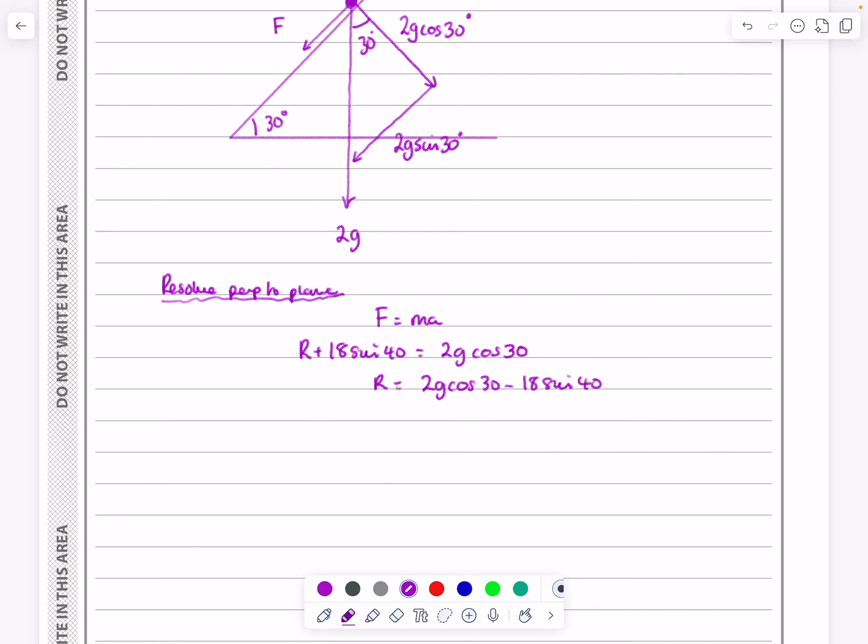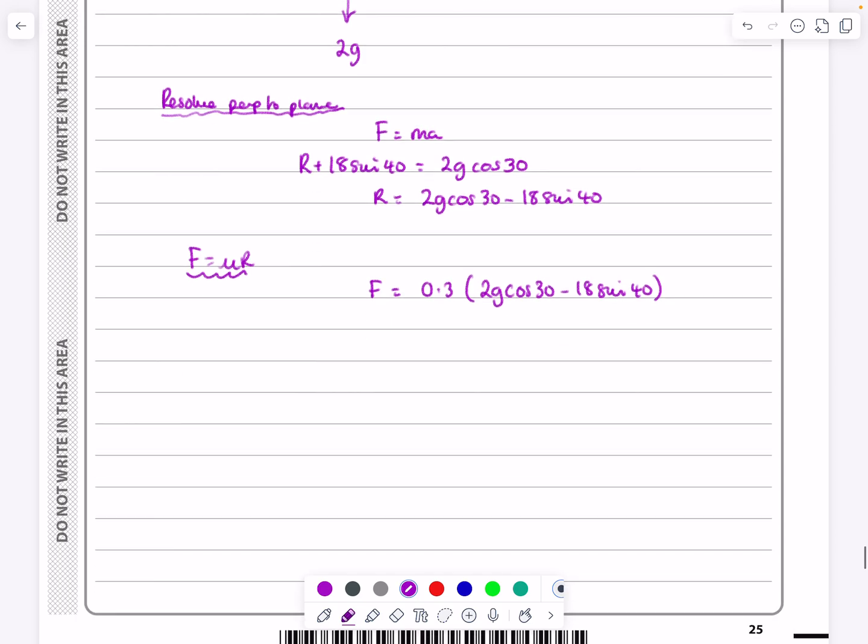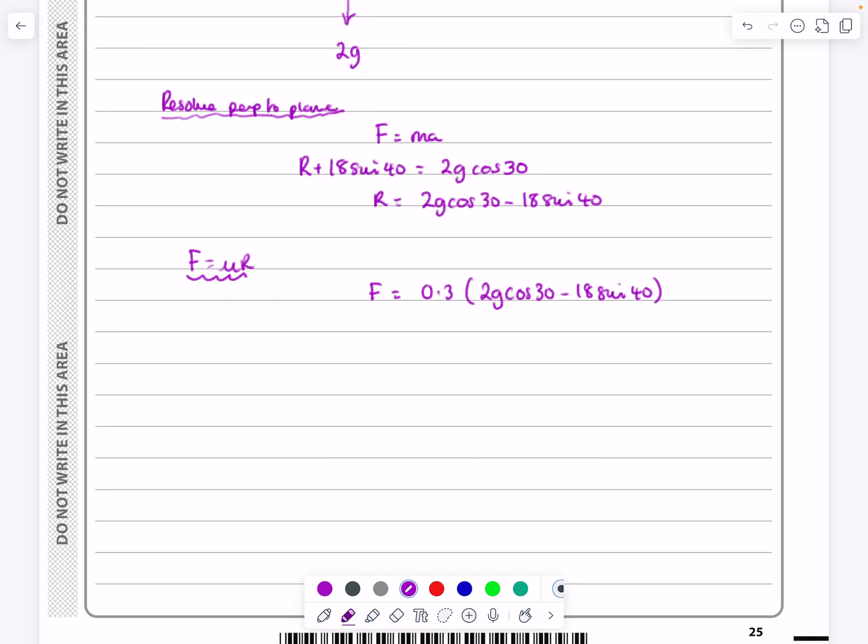So that means that r is going to be equal to 2g cos 30 minus 18 sin 40. Now, I'm not going to work out that value. I'm going to leave it all to the very end and work it out. What was the reason for getting r so that I could get f equals mu r. So if f is equal to mu r, f is equal to 0.3 multiplied by what we've just found, 2g cos 30 minus 18 sin 40. And again, I'm just going to leave that like that.